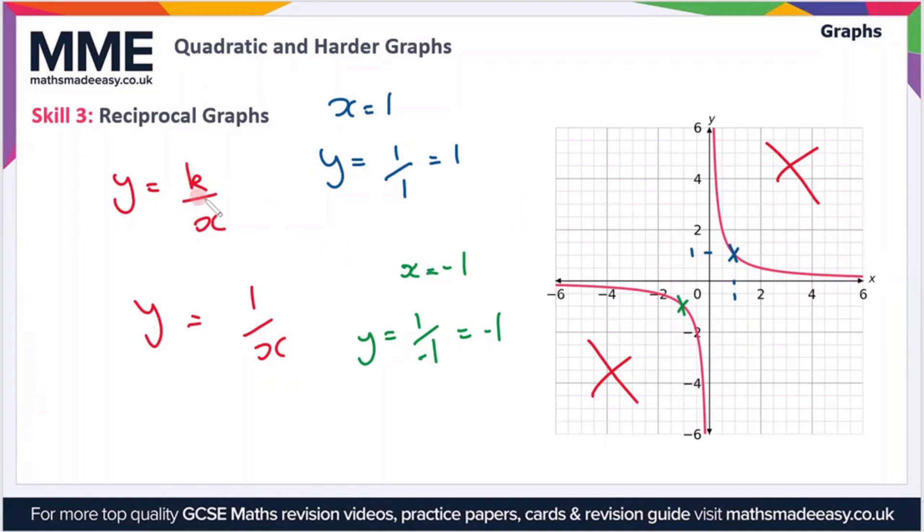So the final thing to point out is that this is the same regardless of the value of k. So it could be two, it could be three, it could be a million. The graph will generally have this sort of structure.